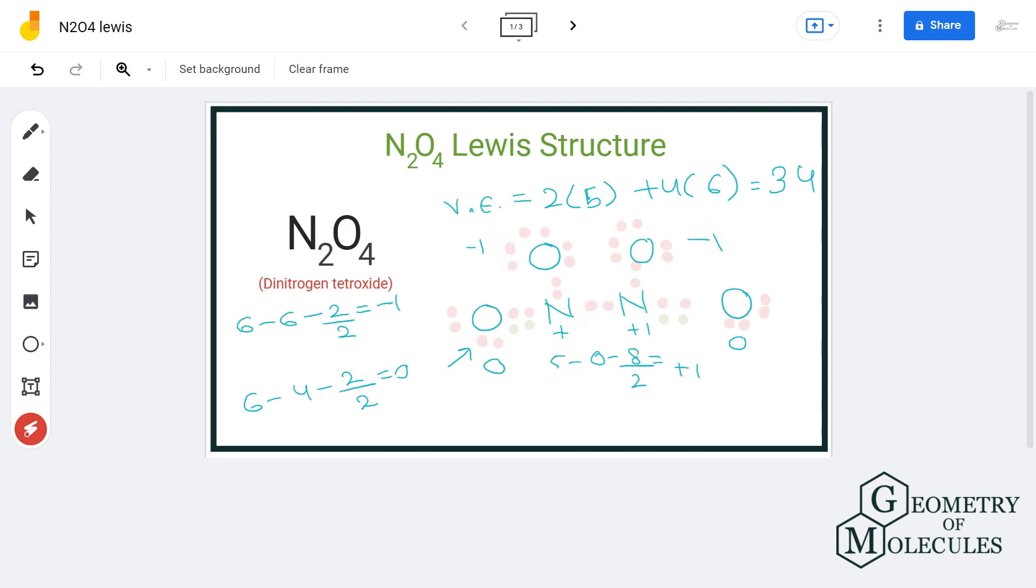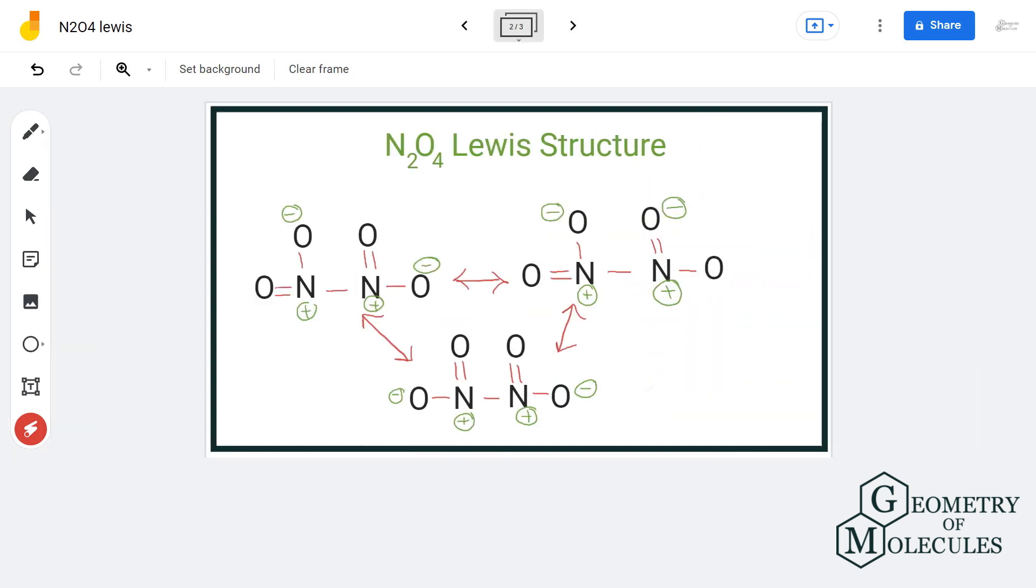Also, you can shift electrons from any of the oxygen atoms to fulfill the octet of nitrogen atom, and that won't make any difference. Such structures that have different arrangement of electrons but the connectivity of atoms the same are known as resonance structures, as shown here.